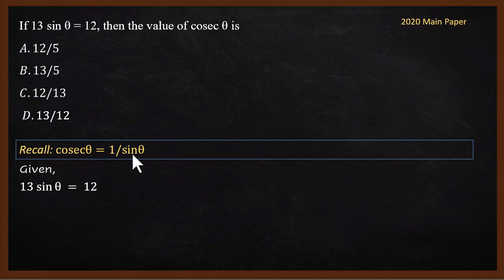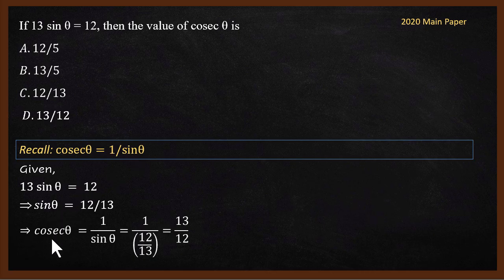13 sin θ = 12, which means sin θ is 12/13. So let's make cosecant θ, I will substitute. 1 ÷ sin θ = 1 ÷ (12/13). Denominator and numerator, so 13 will go to the numerator and we end up with 13/12. 13/12 is the answer.